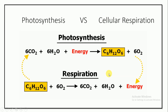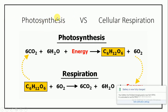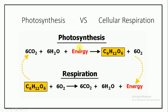In bioenergetics we differentiate between photosynthesis and cellular respiration. As we know from earlier classes, 'photo' means light and 'synthesis' means building up, so photosynthesis is the process in which green plants prepare their own food in the presence of sunlight. In photosynthesis, carbon dioxide and water molecules react along with energy to form glucose, and oxygen is released as a byproduct — this is a balanced chemical reaction.